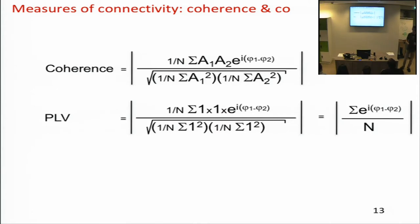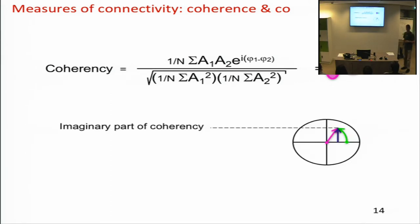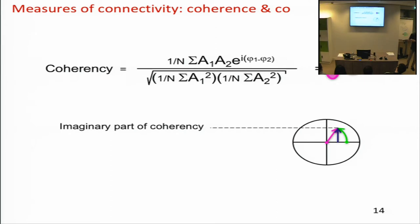Coherence is an absolute value — the length of the arrow. If instead we keep coherence as a complex-valued quantity, we call it coherency. There is an amplitude term (the traditional coherence coefficient) and a phase difference term giving the average phase relationship at a particular frequency. Representing this in terms of real and imaginary parts, it was proposed about 10 years ago that looking only at the imaginary part of coherency is better when we want to interpret the measure as reflecting true interactions, since a significant non-zero imaginary coherence value cannot be explained by common sources.